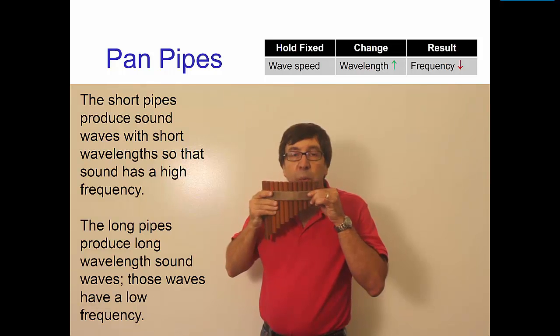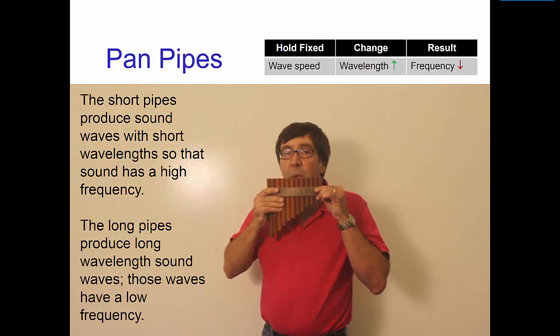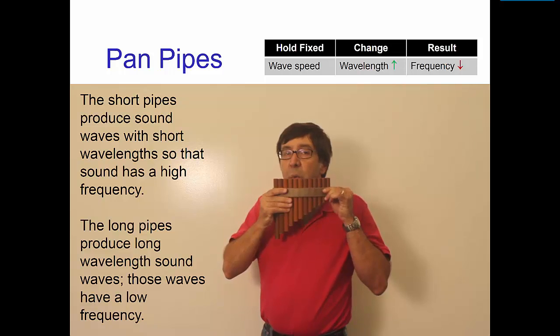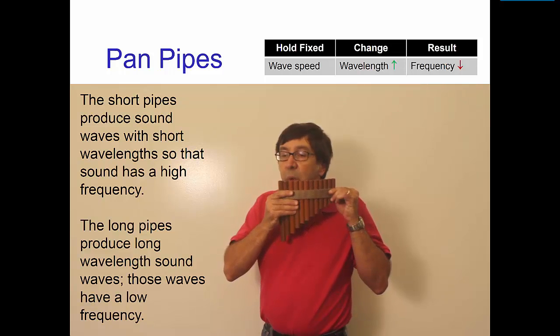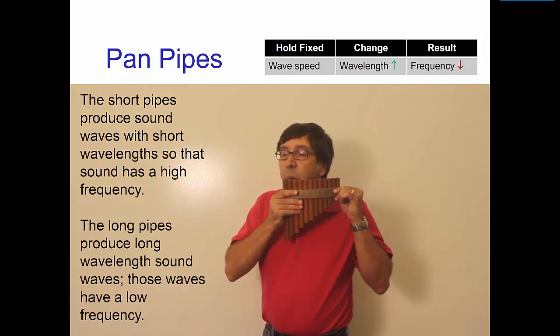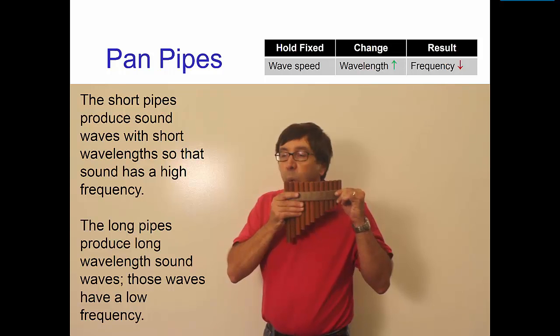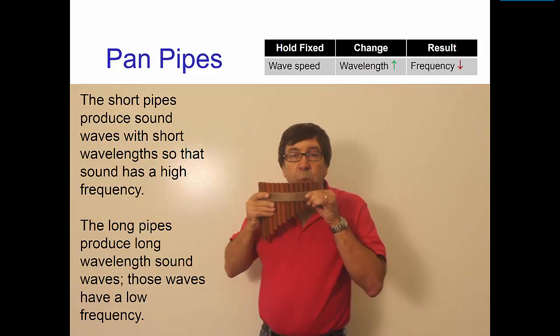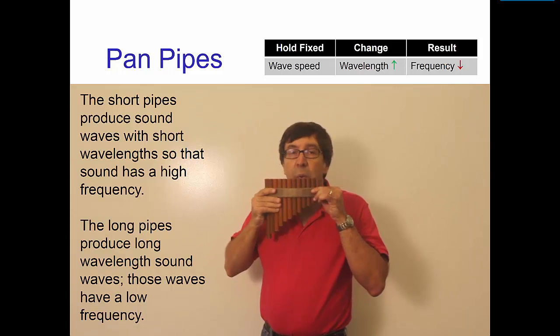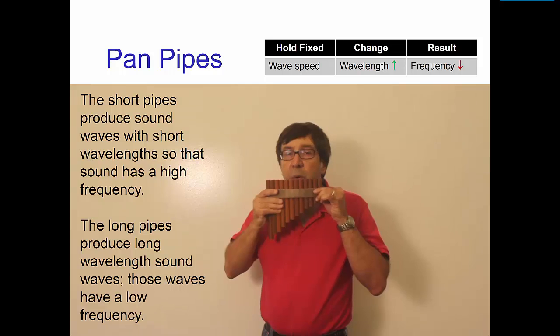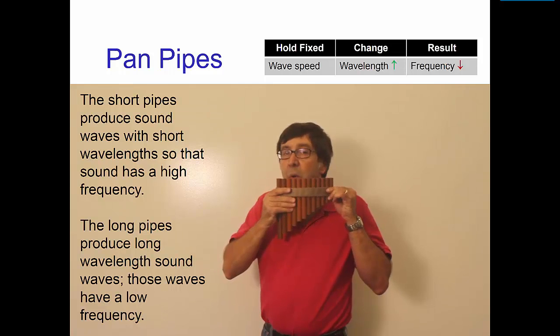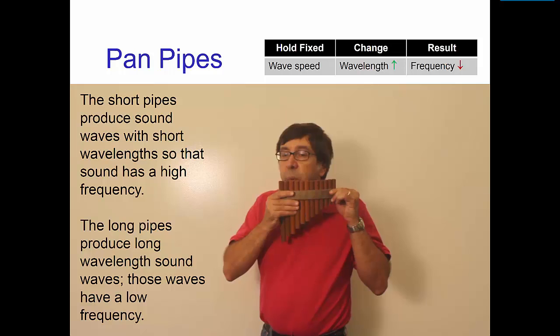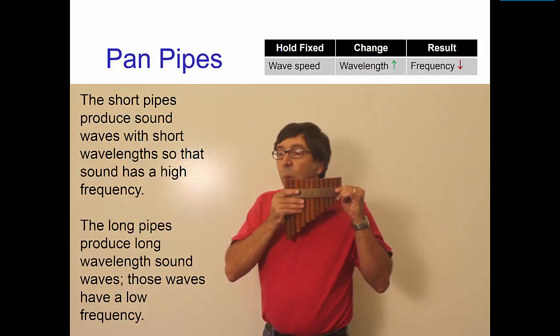Here's my feeble attempt to demonstrate the relation between wavelength and frequency using a pan pipe. The short pipes produce sound waves with short wavelengths, so that sound has a high frequency. We hear that as a high-pitched note. Similarly, the long pipes produce long wavelength sound waves. Those waves have a low frequency. Wow, that's really pathetic.